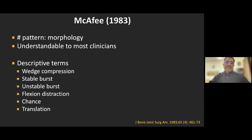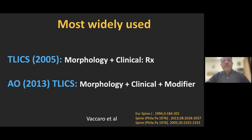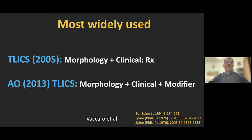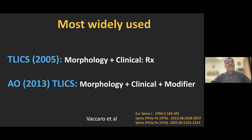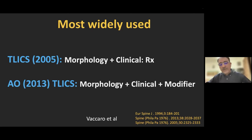Currently, two most widely used classification systems were both proposed by Vaccaro et al. In 2005, the spine trauma group developed TLICS — the Thoracolumbar Injury Classification System — based on fracture morphology and neurology, using a point-based system to determine treatment. In 2013, the same group along with AO modified the AO classification into the updated AO-TLICS classification, again based on morphology, simplified clinical behavior, and modifiers. In TLICS, injury morphology scores are: compression injury = 1 point, burst = 2 points, rotation/translation = 3 points, distraction = 4 points.